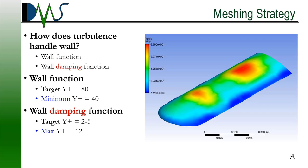What happens with the wall damping function is that it doesn't actually integrate the entire laminar sub-layer. It actually just damps out turbulence within that region. And it just leaves it to normal laminar viscosity.